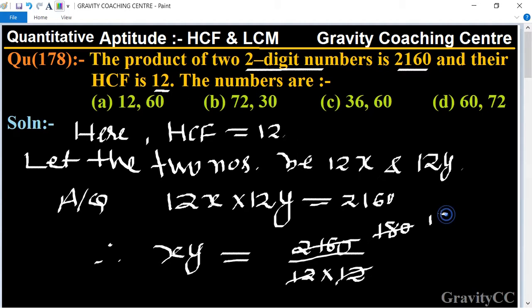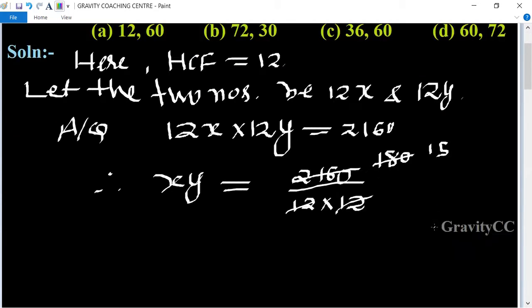Now we find the co-primes whose product is 15. Co-prime products of 15 equal to (1, 15) and (5, 3).